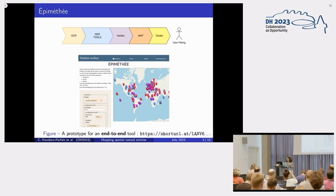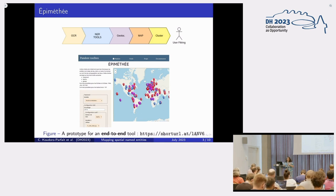On the map, the blue points represent SpaCy results, the red points represent Flair results, and the violet points represent the results from the combination of the two NER tools.